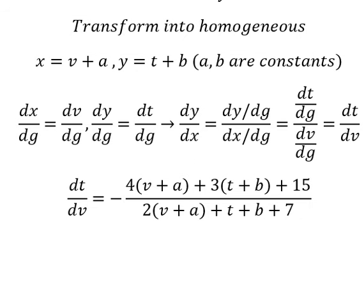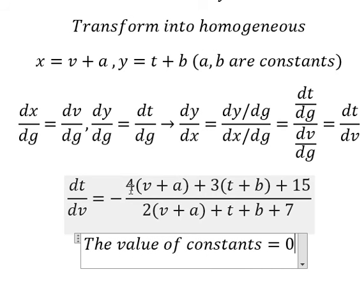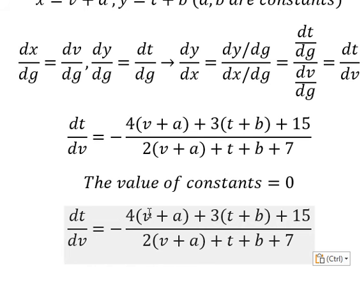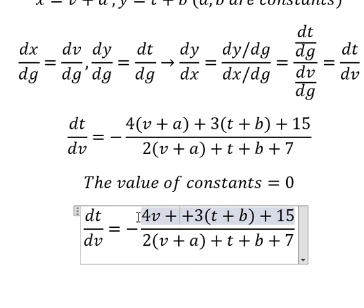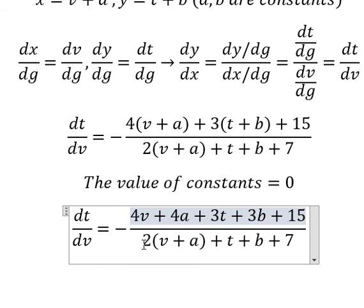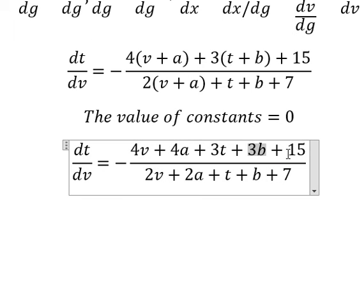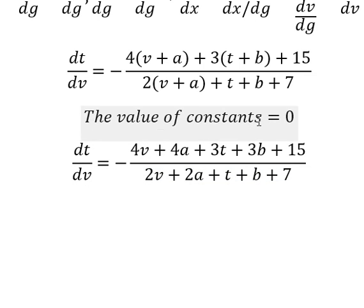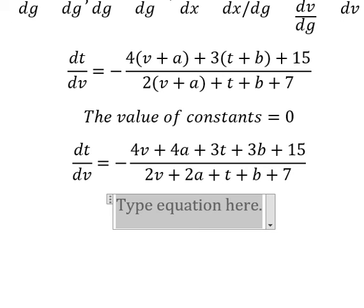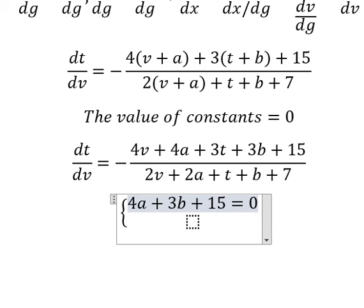To create the homogeneous form, the value of the constants should be equal to 0. So we have 4 with V, 4 with A, 3 with T and 3 with B. We have 4A, 3B, 15 and 2A, B, and 7. Setting the constants equal to 0 gives us the system of equations: 4A plus 3B plus 15 equals 0, and 2A plus B plus 7 equals 0.